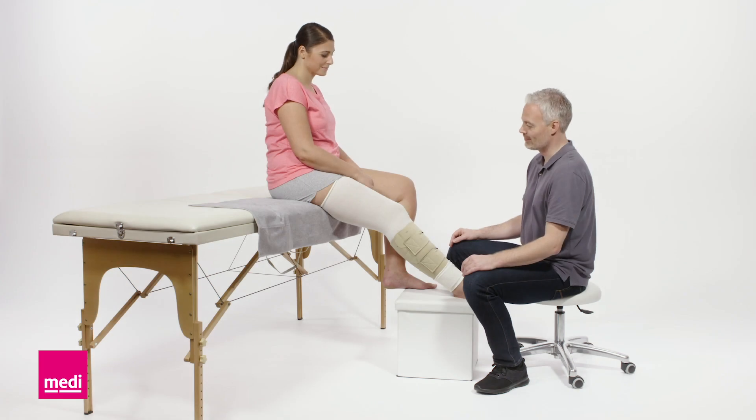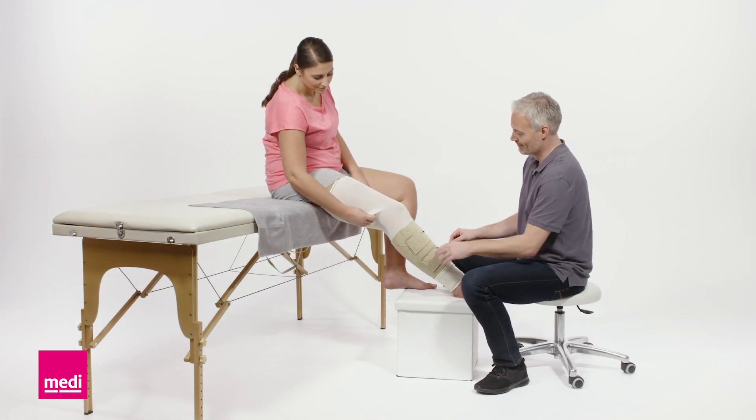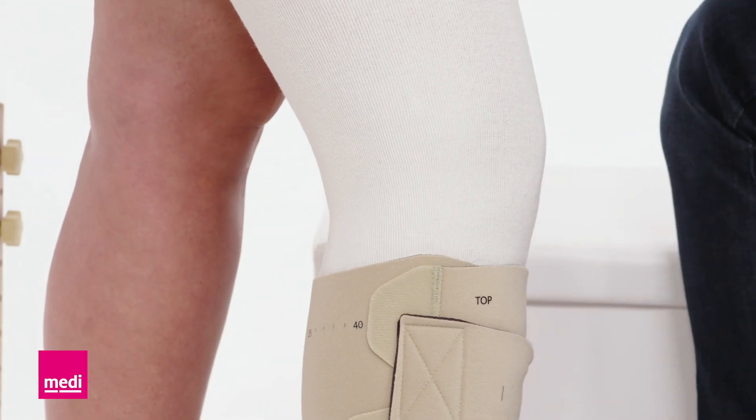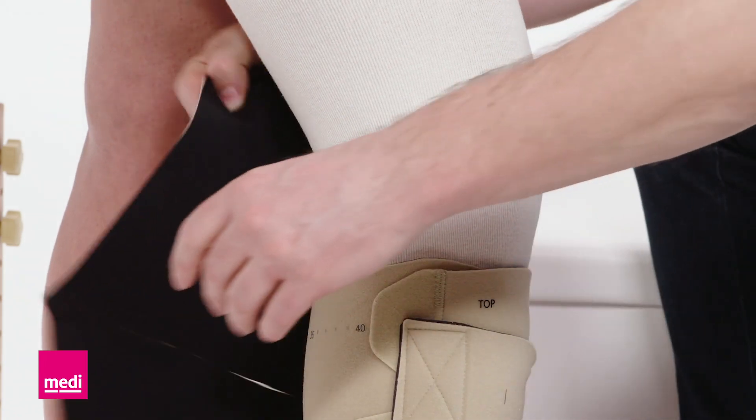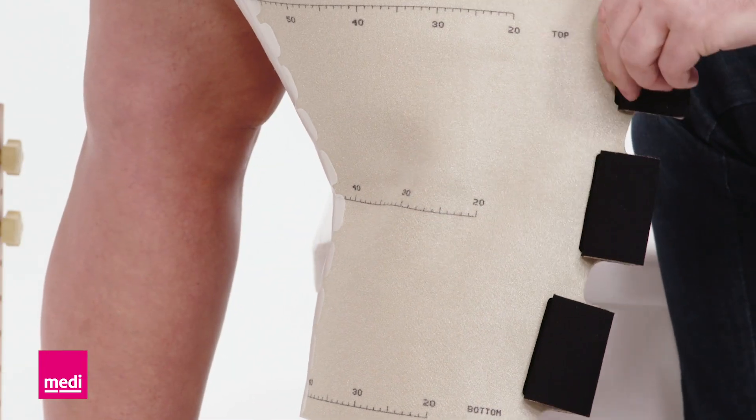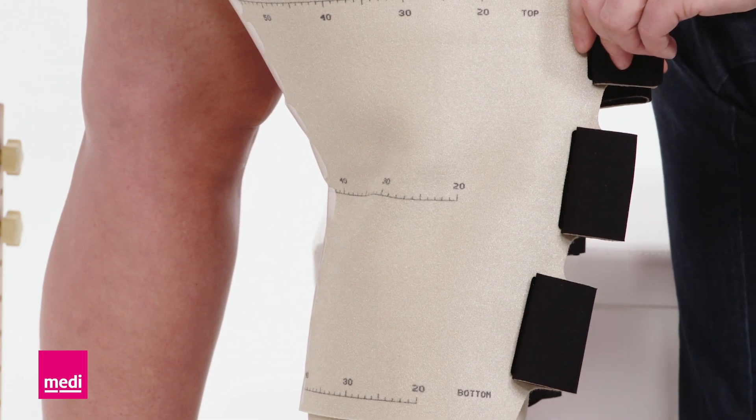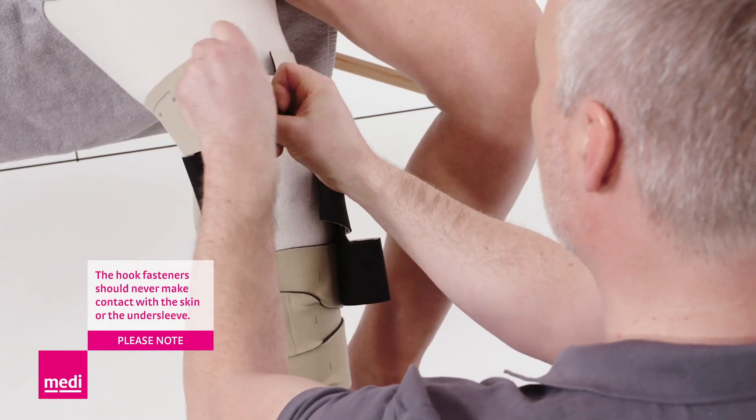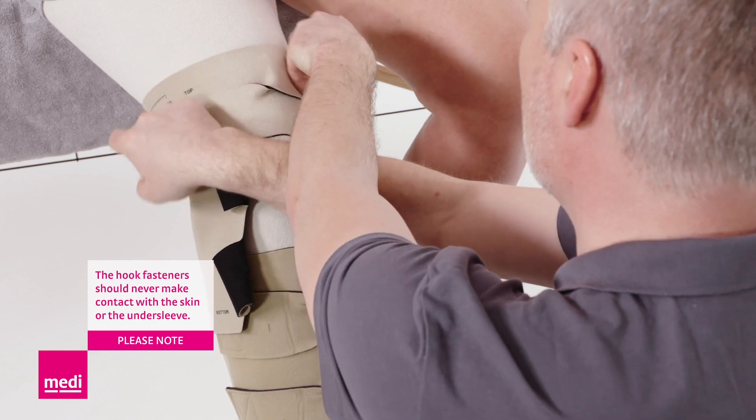Make sure there are no wrinkles in the undersleeve. Align the knee component in the knee crease at the height of the medial numbers. Attach the top two bands loosely to hold the garment in place.